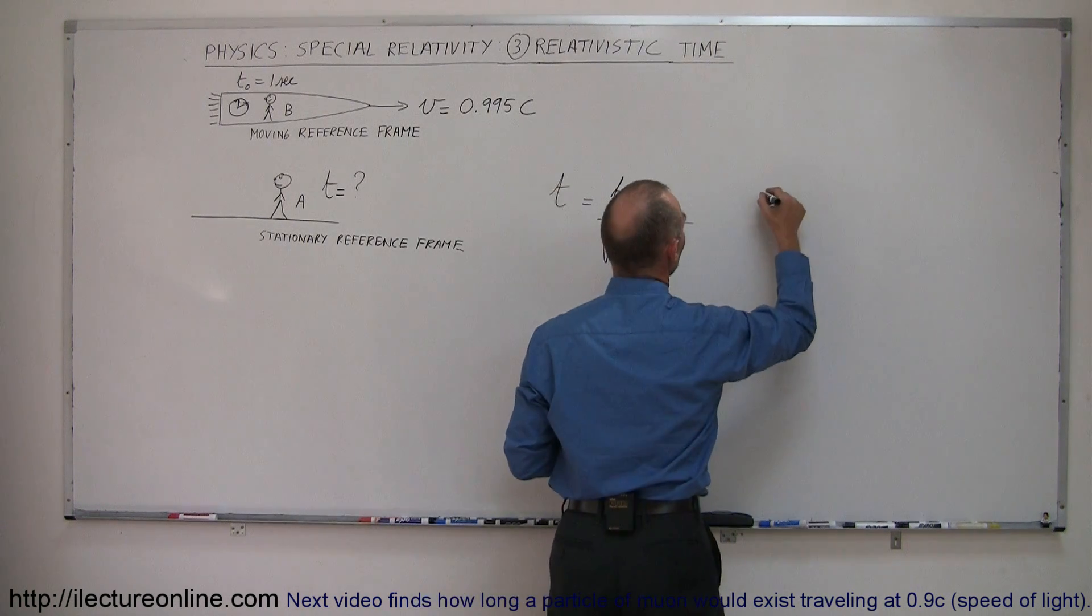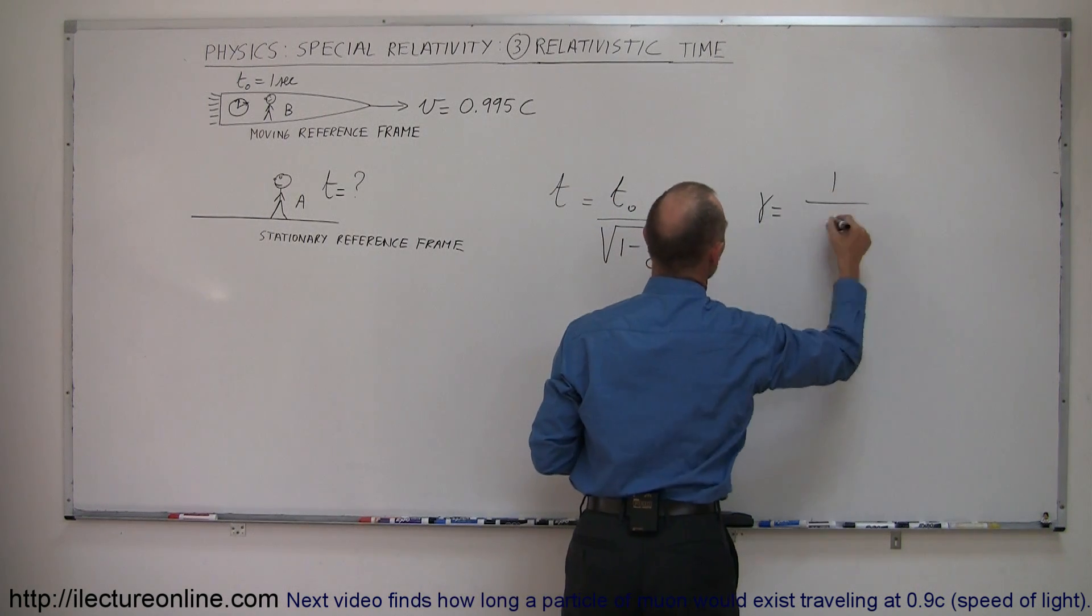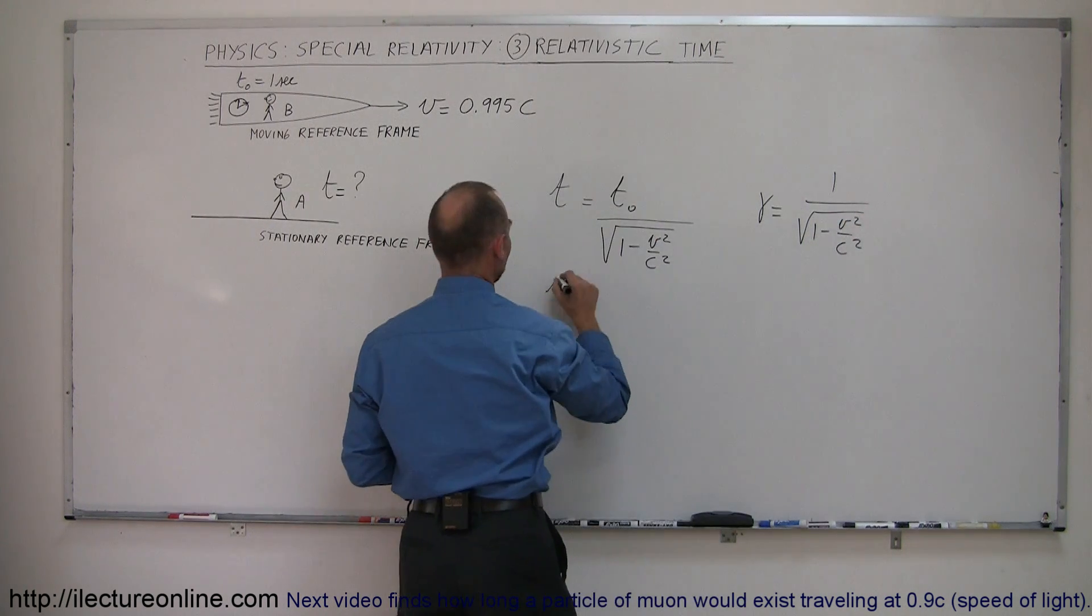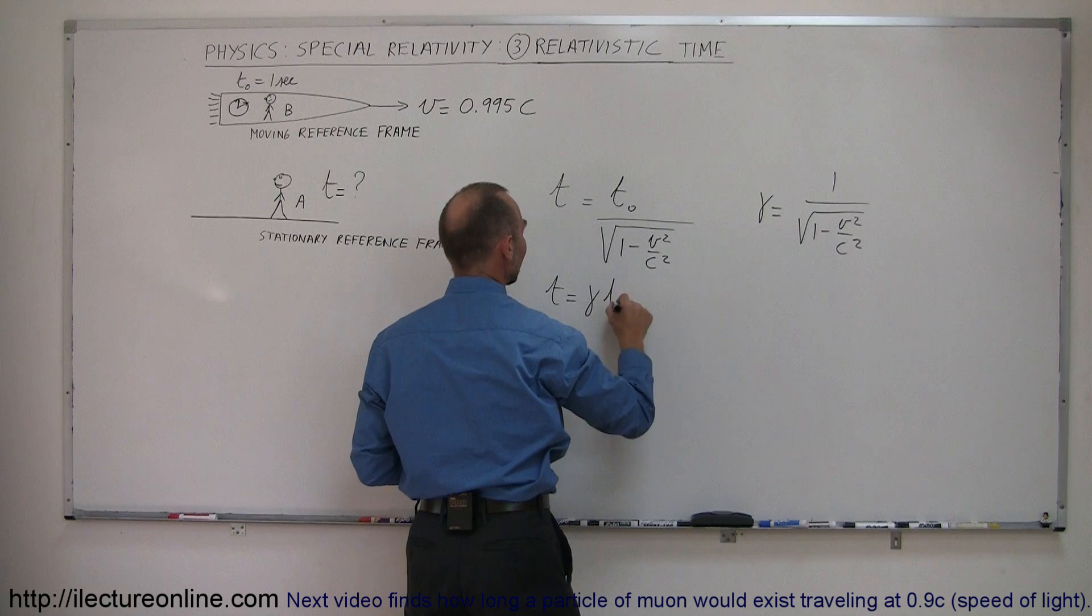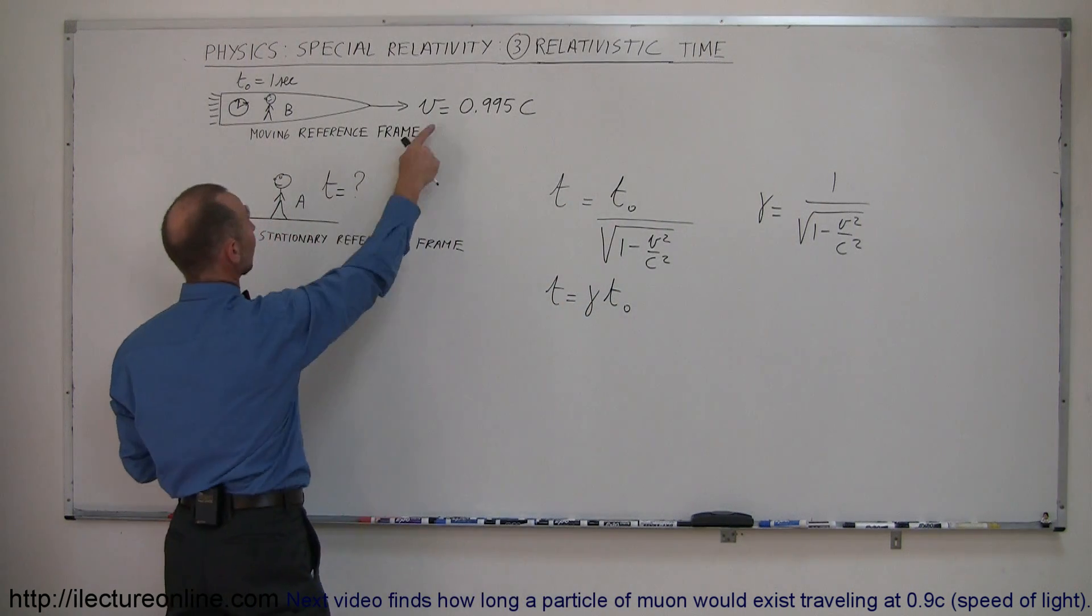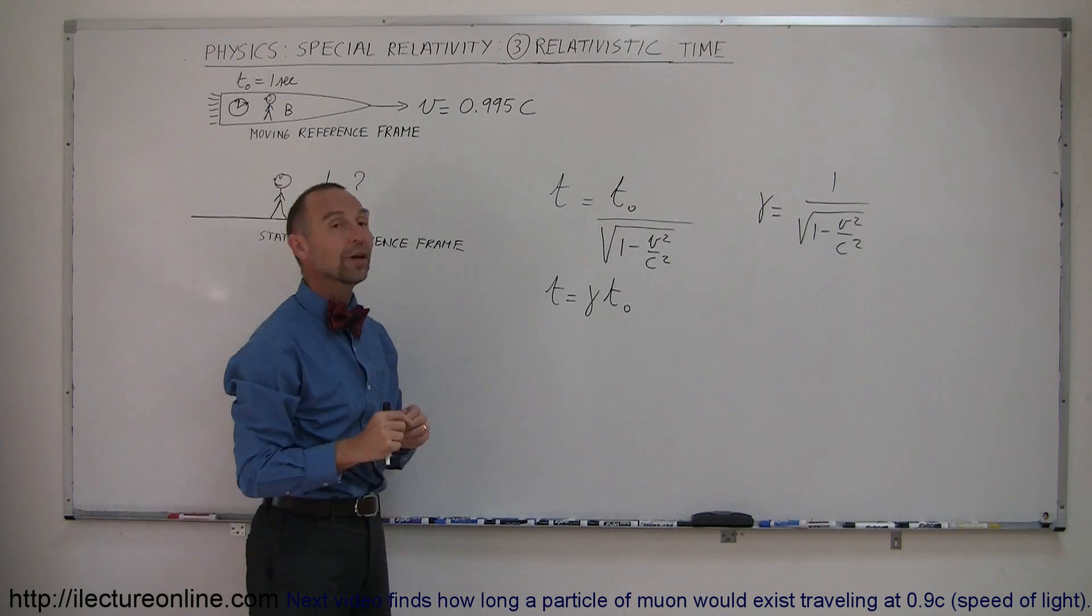Since gamma equals 1 over the square root of 1 minus V²/C², we can say that T equals gamma times T₀. So all we have to do is figure out what gamma is based upon the velocity of the moving event.